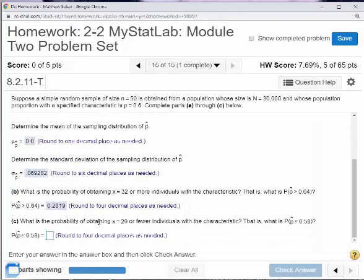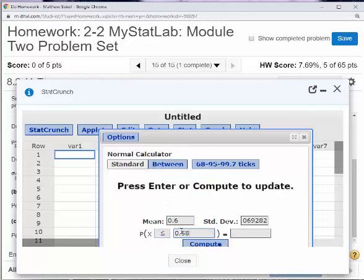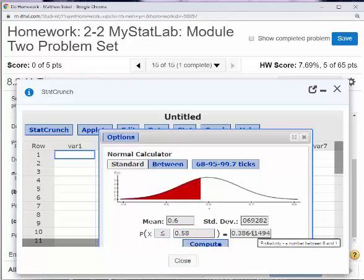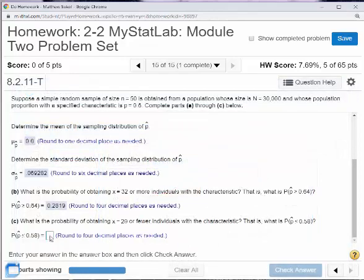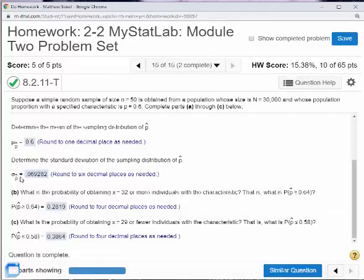So the next one says what is the probability of obtaining x equals 29 or fewer individuals with this characteristic? So what is the probability that p-hat is less than 0.58? I want to be less than 0.58. Compute. This is my answer to four decimal places right here. And we got it. As you can see, once you figure out what the mean μ sub p-hat and σ p-hat is, it's very easy to use the standard normal calculator here to solve this.